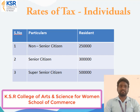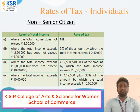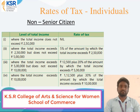Under non-senior citizen: where total income does not exceed two lakh fifty thousand, the rate of tax is nil. Where total income exceeds two lakh fifty thousand but does not exceed five lakh, the rate is five percent of the amount by which total income exceeds two lakh fifty thousand. Where total income exceeds five lakh but does not exceed ten lakh, the rate is twelve thousand five hundred plus twenty percent of the amount by which total income exceeds five lakh. Where total income exceeds ten lakh, the rate is one lakh twelve thousand five hundred plus thirty percent of the amount by which total income exceeds ten lakh.